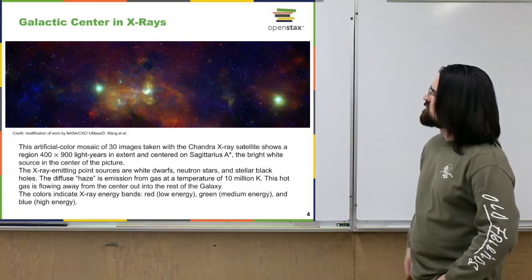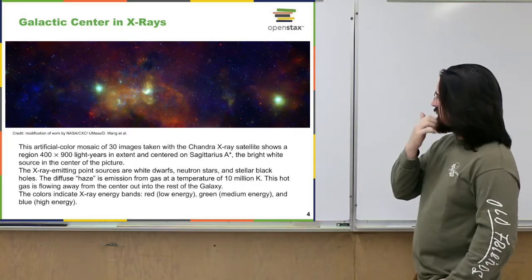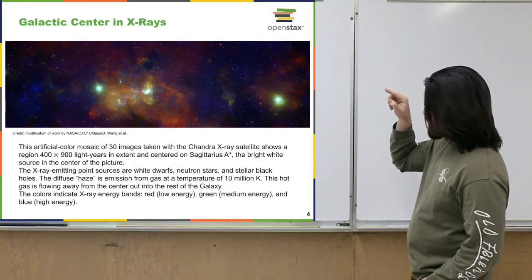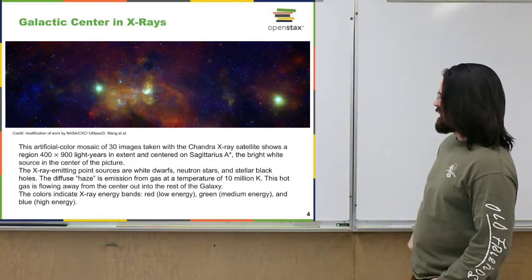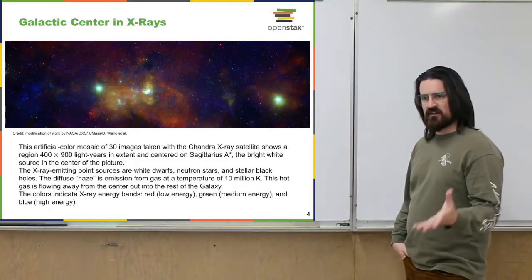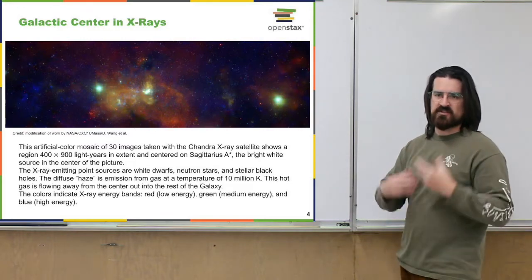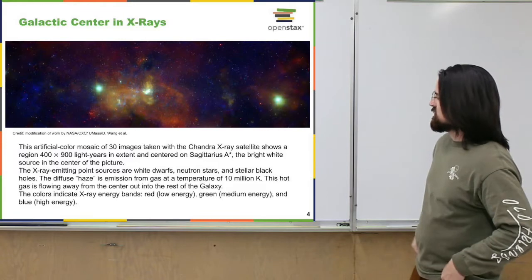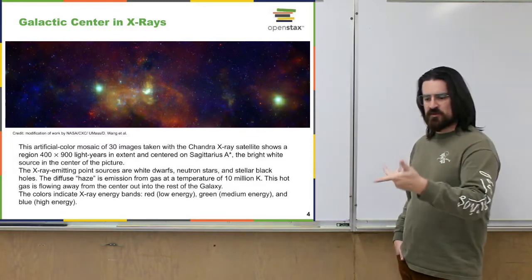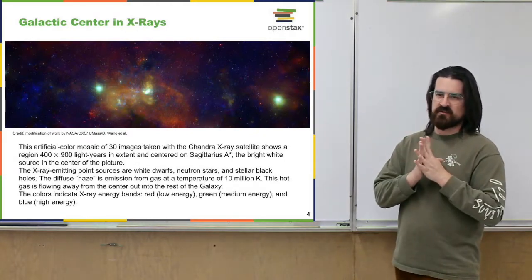This is another image looking at the center of the galaxy, about 900 light years across. Sagittarius A*, the supermassive black hole, is in the bright white area at the center. This image is taken in the X-ray region of the electromagnetic spectrum — very energetic electromagnetic waves. The really bright areas are intense X-ray emitters. That black hole is an X-ray emitter; black holes tend to emit X-rays when they're accreting material — the material gets really hot and gives off bursts of X-rays.